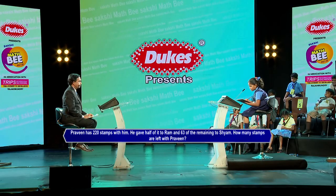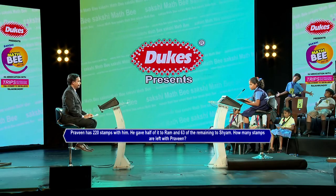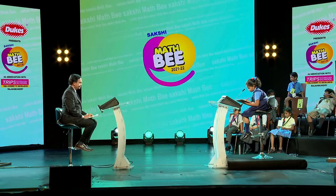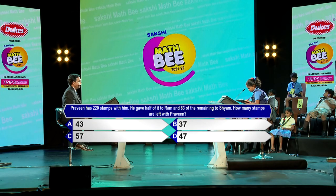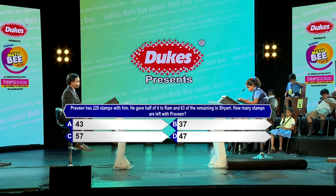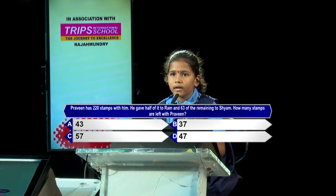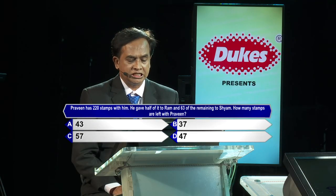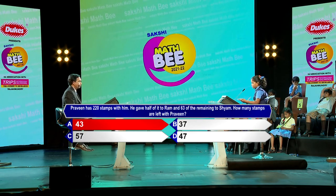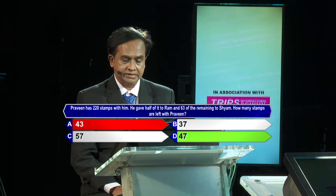Next question: Praveen has 220 stamps. He gave half of them to Ram and 63 of the remaining to Shyam. How many stamps are left with Praveen? Options: A) 43, B) 37, C) 57, D) 47. Option A — kindly lock option A 43. I'm so sorry, option A 43 is the wrong answer; option D 47 is the correct answer. Many congratulations for coming this far.